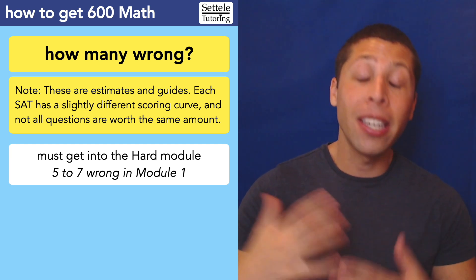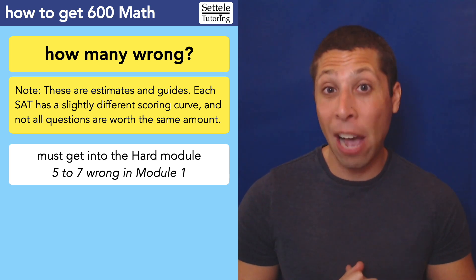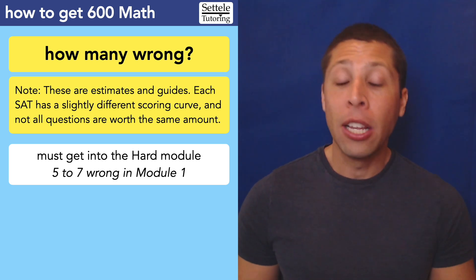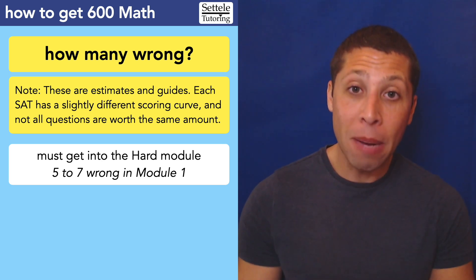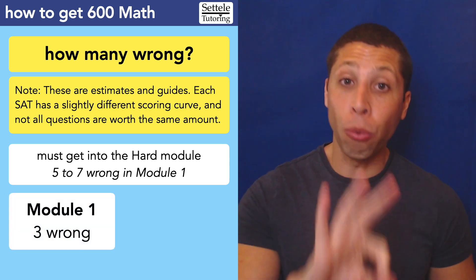So, five is very conservative. If you make five questions wrong, you're still pretty much guaranteed to get in the hard module. But six or seven, it starts to get risky. It might depend on which seven you get wrong. Easier questions tend to count more. So, you've got to be careful. You've got to make sure you're keeping the errors to a minimum in that first module. In fact,